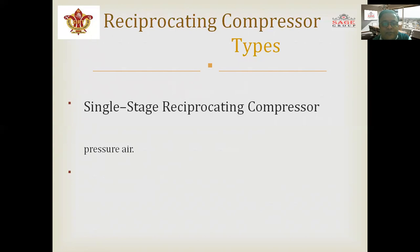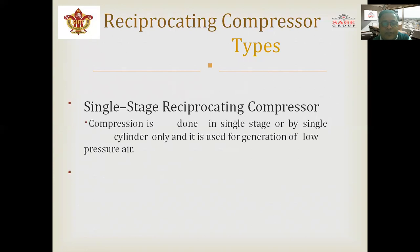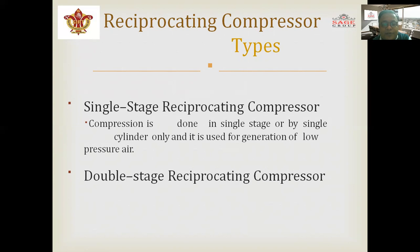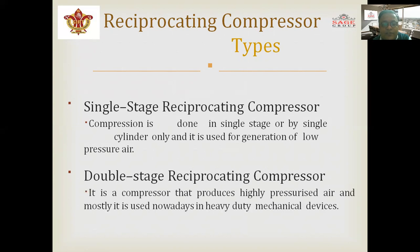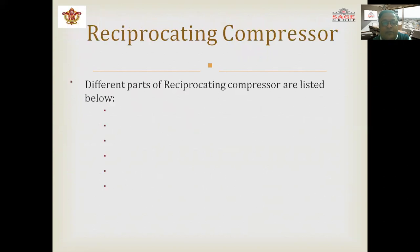A single-stage reciprocating compressor performs compression in a single stage by a single cylinder only, and is used for generating low-pressure air. A double-stage reciprocating air compressor performs compression in more than one cylinder piston, and is used where highly pressurized air is required to drive a generator or another device.